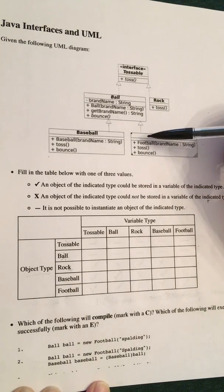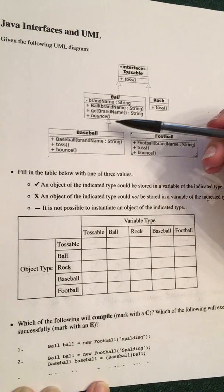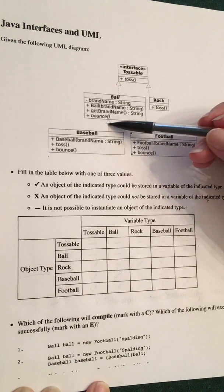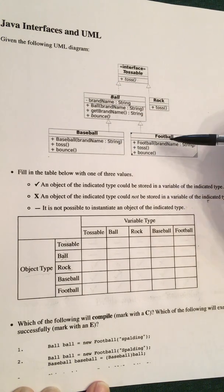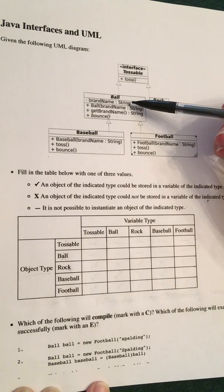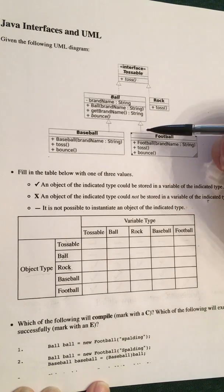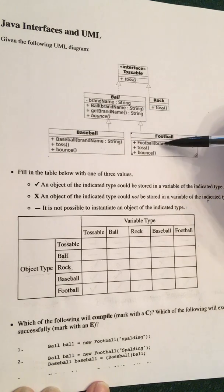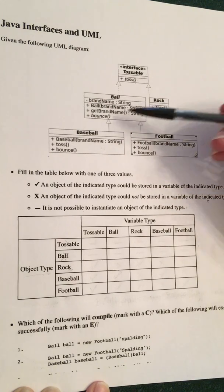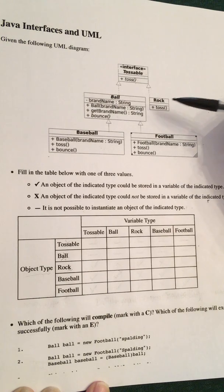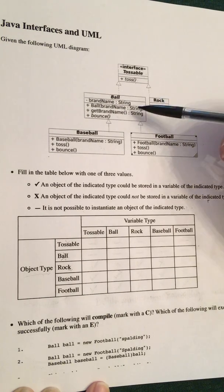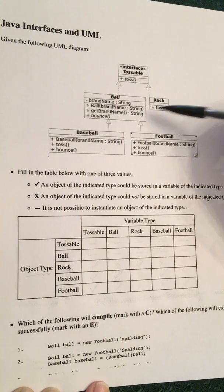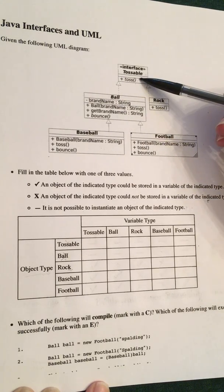You'll also see that, just like we've been using inheritance before spring break, these solid lines indicate that Baseball and Football extend Ball — Baseball is a Ball and Football is a Ball, they have that relationship. You'll notice that Rock does not have any relationship with Ball, Baseball, or Football other than that they all implement this interface tossable.